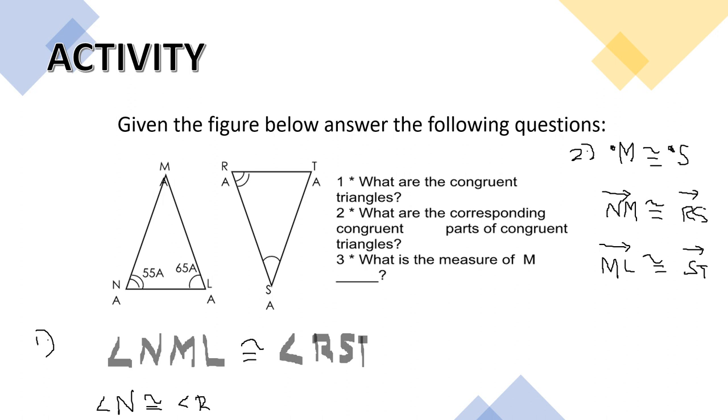Those are the parts of congruent triangles. And there's more. NL. This one. NL is also congruent to RT.